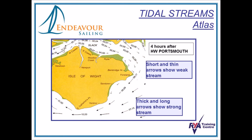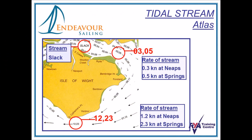Here we have some data as it would appear within a tidal stream atlas. Tidal stream atlases are fantastic for giving us a very visual, pictorial view of what the tide is doing. Shorter, thinner arrows show a weaker tidal stream, whereas thicker, longer arrows indicate a much stronger tidal stream. At the top it says 'slack', meaning there is very little tidal stream affecting us at that moment. The next entry is highlighted and the arrow gives us the direction, which we could measure using our plotter. You then have two numbers: 0.3 and 0.5.